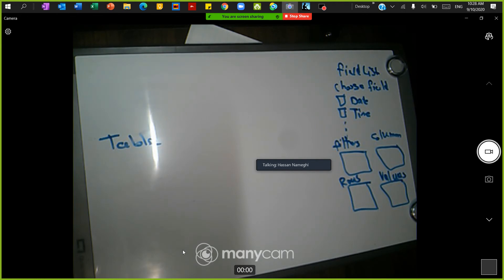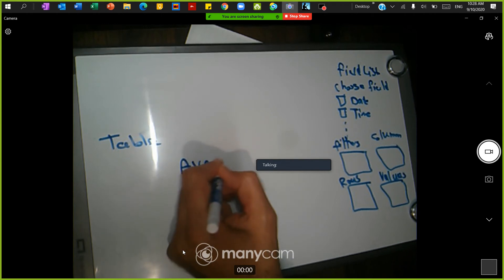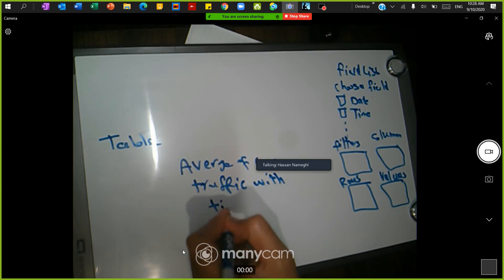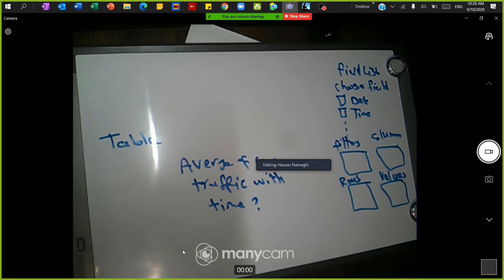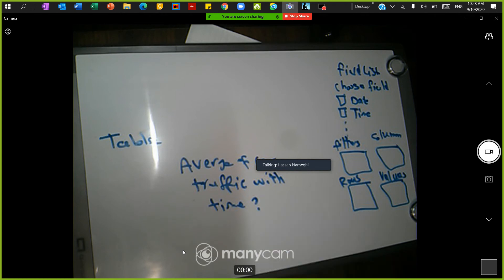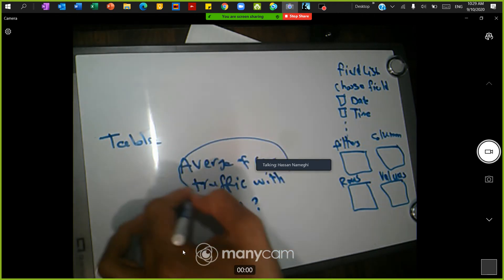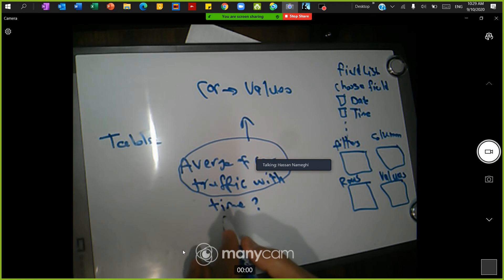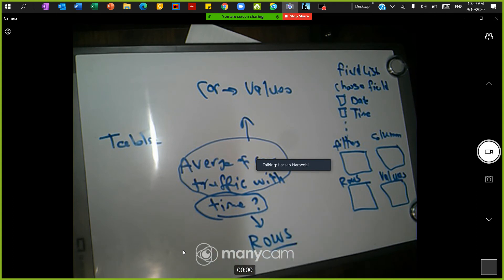Think about your scenario before doing anything. I want to find the average car traffic with respect to time — how does car traffic change across each hour of a 24-hour day. To answer this: drag Car to the Values area, and drag Time to the Rows area.